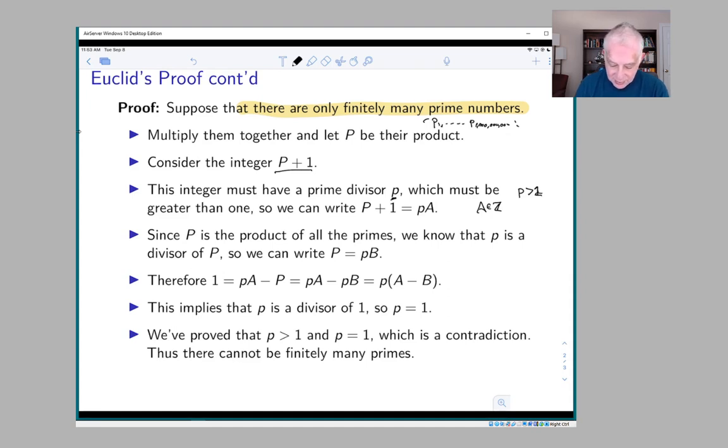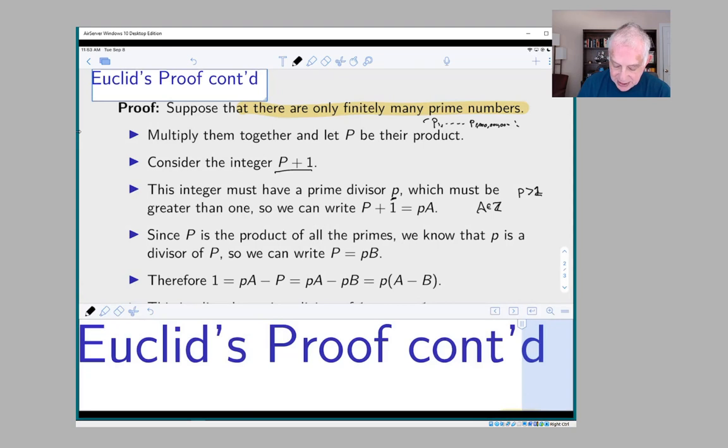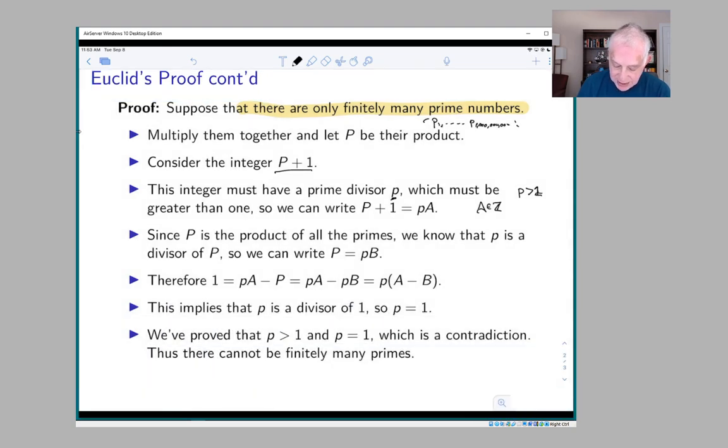Well, now, remember that big P plus one is little p times A. So if we subtract big P from this equation, we get one is little p times A minus big P. But big P is p times B. So that's p times A minus p times B or p times A minus B.